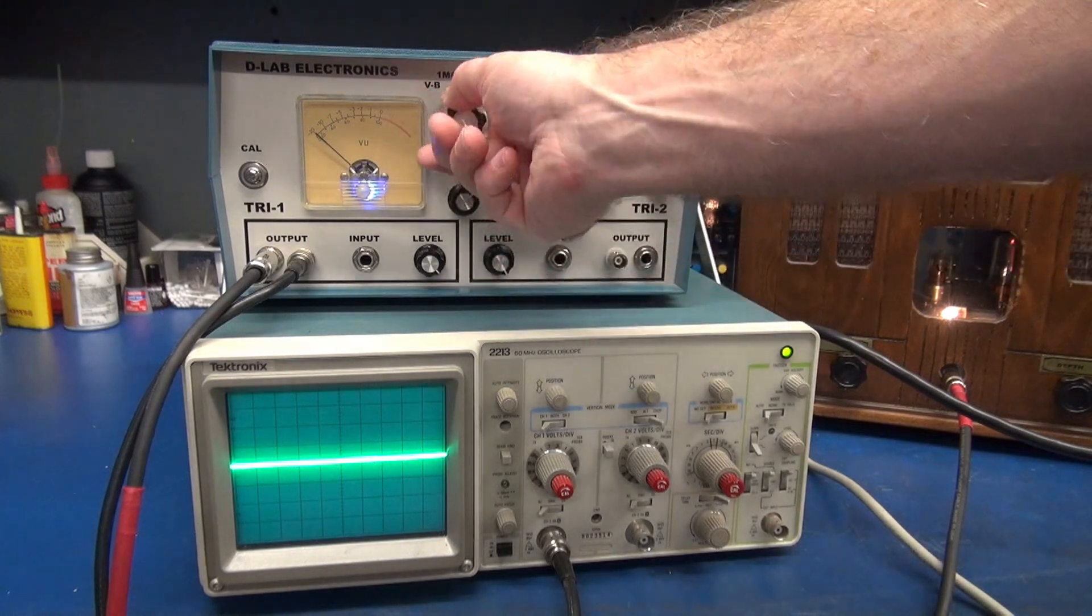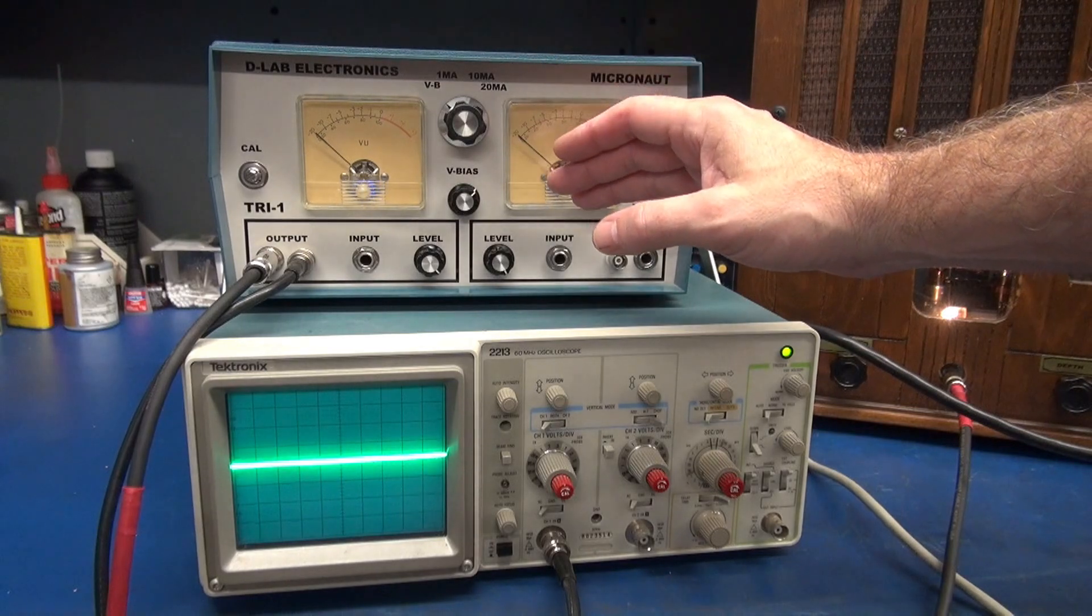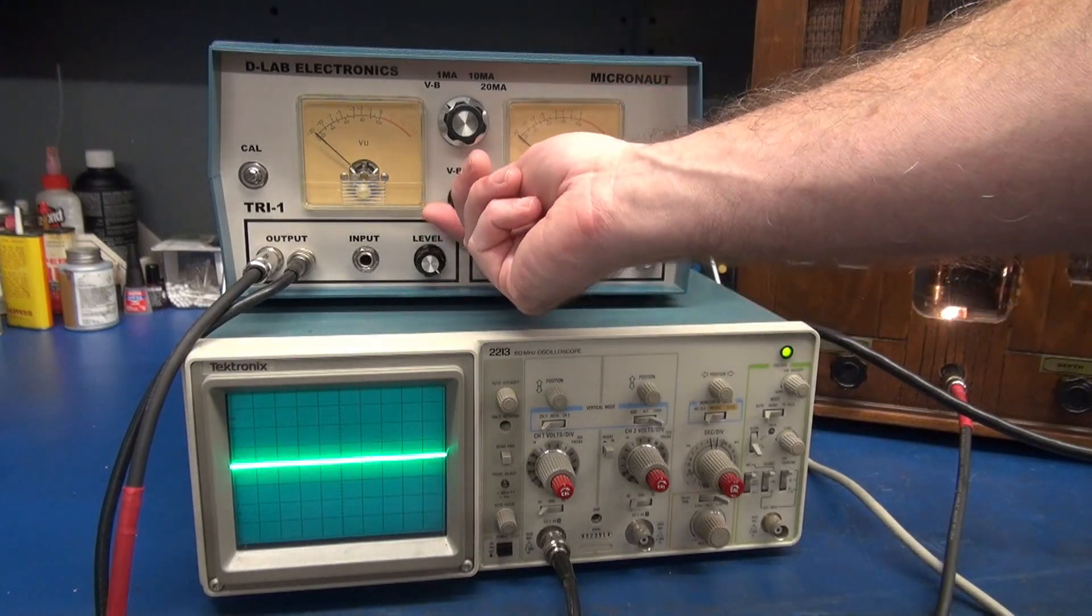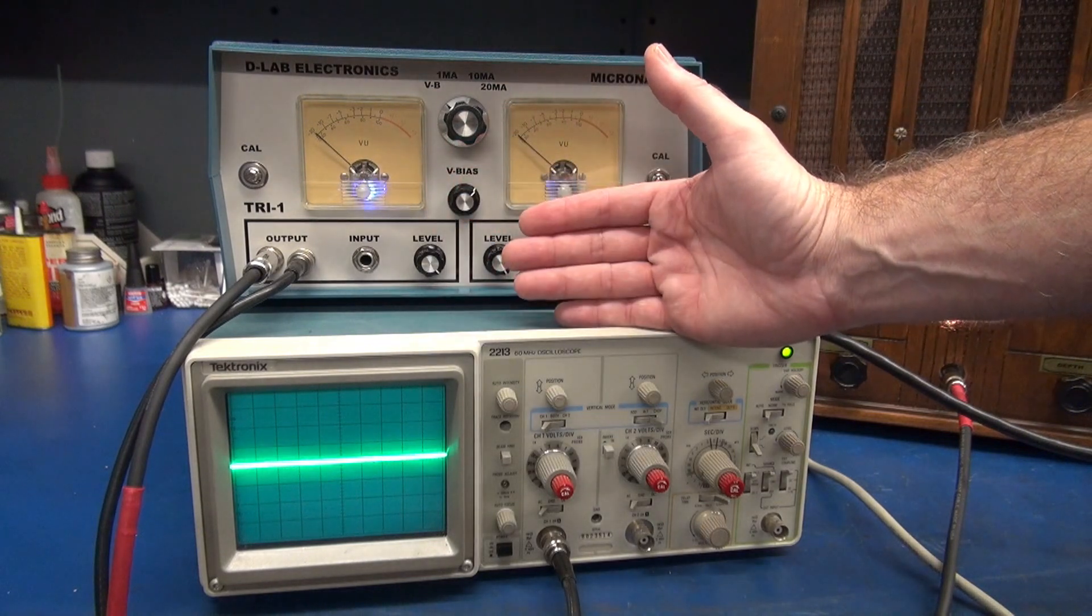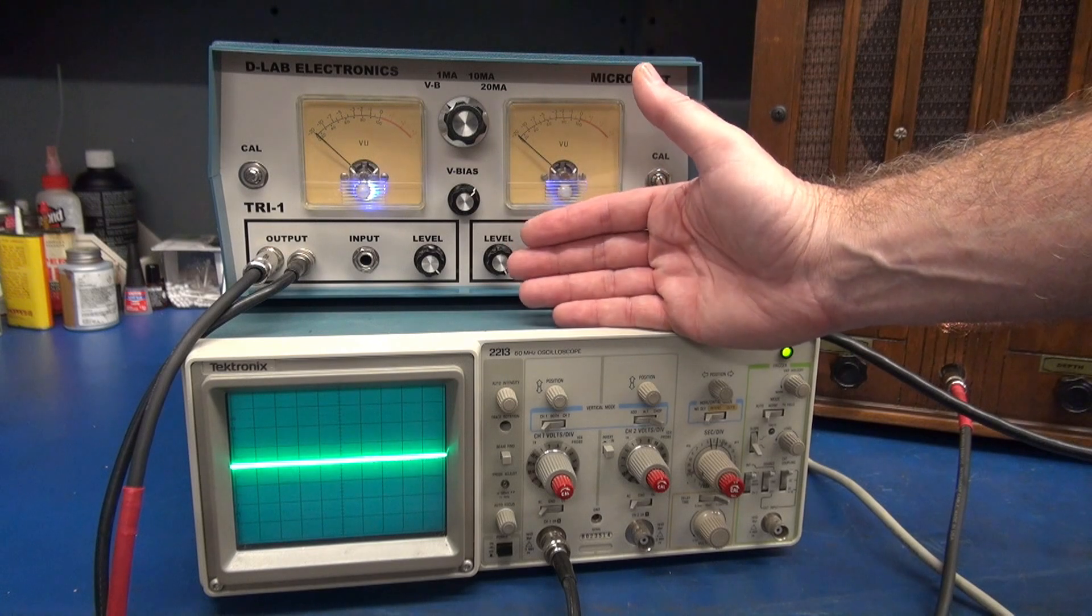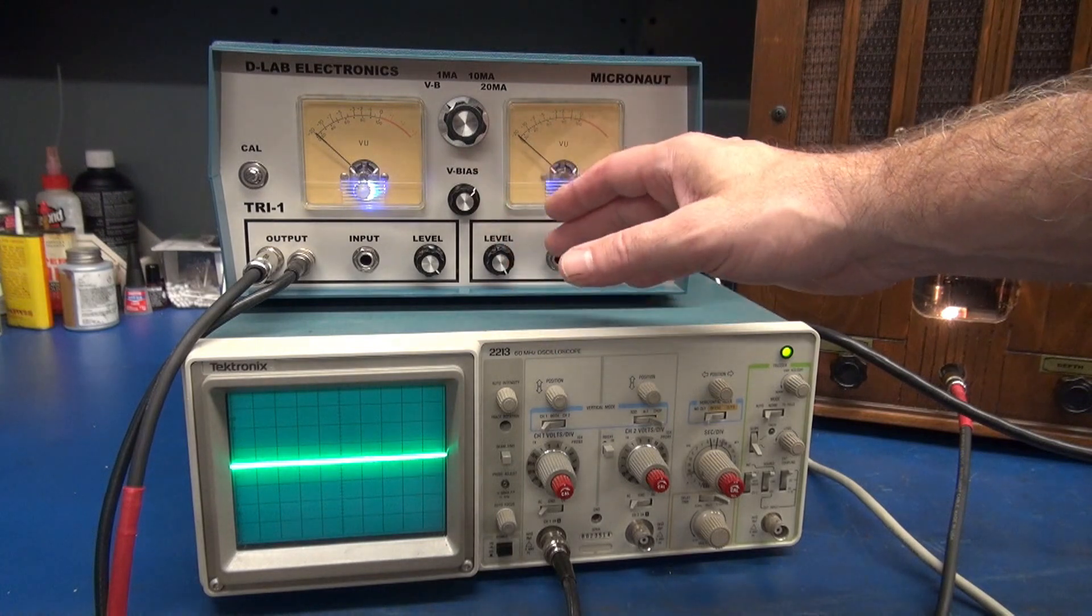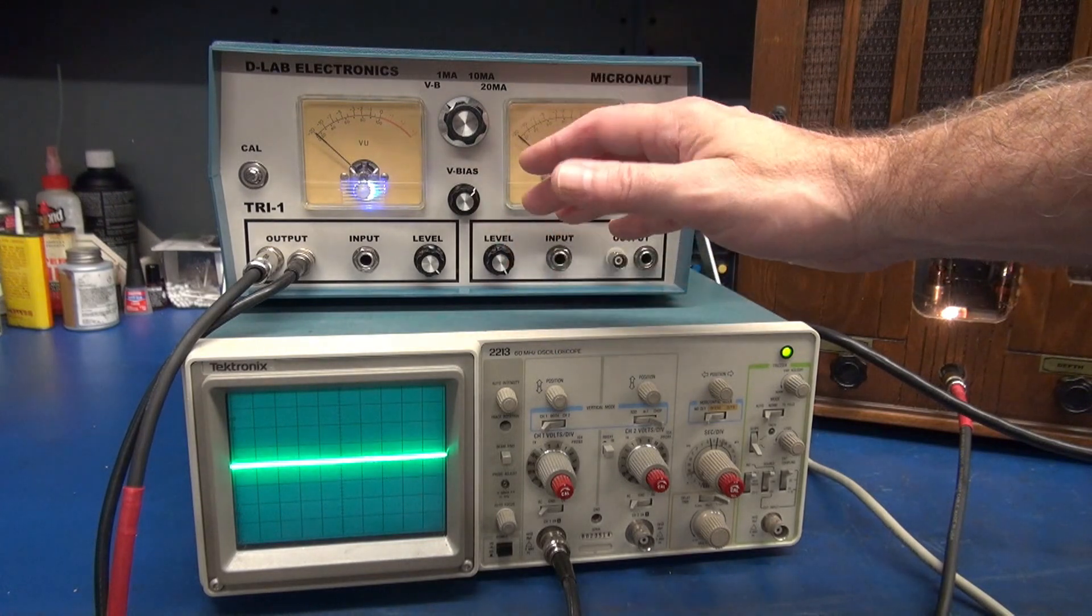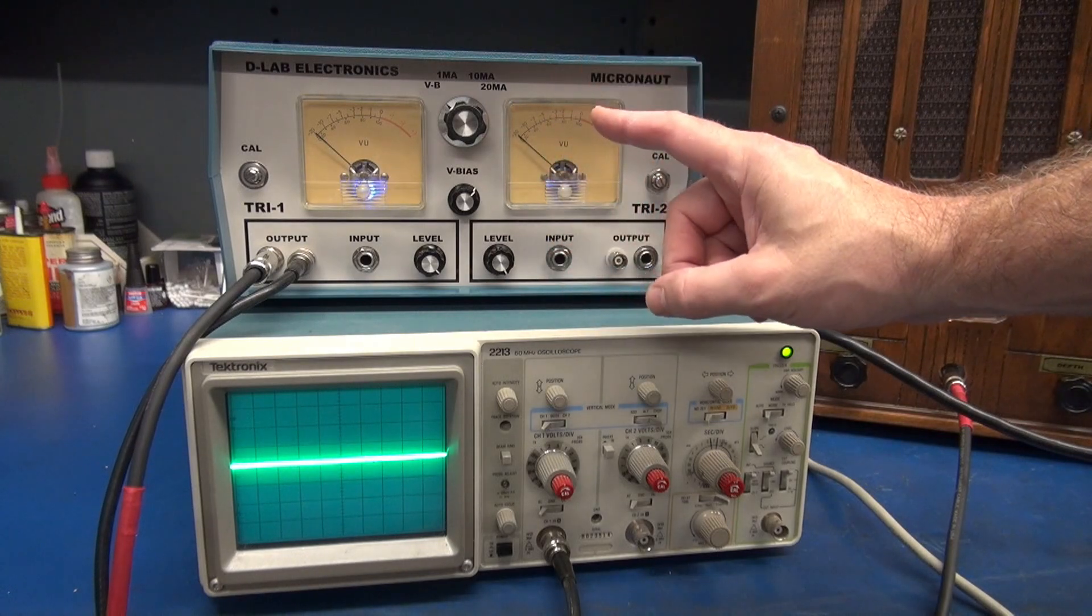If you notice, we have this thing called VB. That's variable bias. This will allow you to dial in the current setting for use, let's say, for a 7025, a 5751, 12AY7, etc. All these tubes share the same base configuration. This function allows you to set the gain point. However, the meter calibration is not accurate.